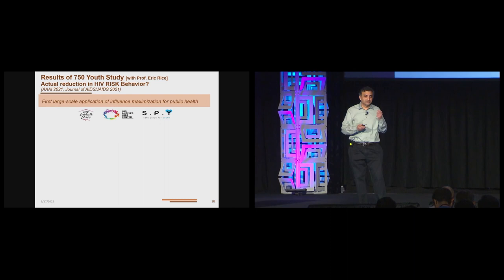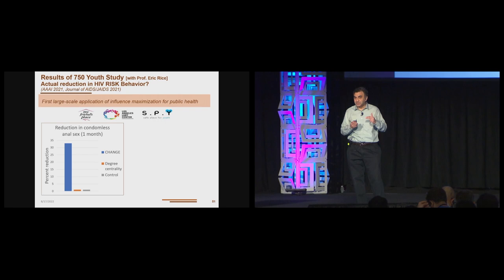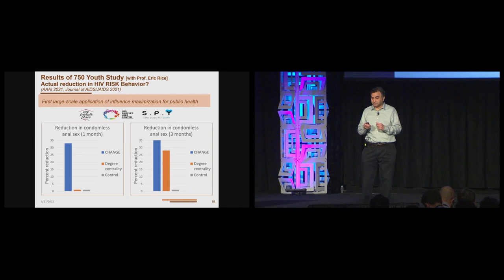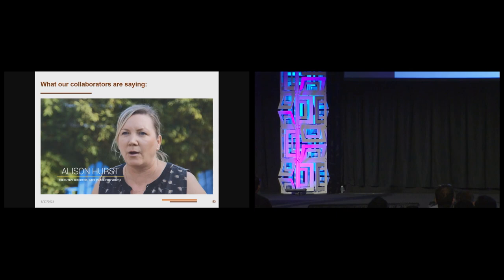And now we want to see what is the actual reduction in HIV risk behaviors. This is again a first large-scale application of influence maximization for public health. This is work done in collaboration with homeless drop-in centers in Los Angeles. And what we are trying to study is, is there an actual reduction in HIV risk behavior? So we select peer leaders and then wait a month and then wait three months and see what was the reduction. With respect to condomless anal sex, which is one of the HIV risk behaviors, with CHANGE there is more than 30% reduction in this behavior. But with degree centrality and control group, there's no reduction. At the end of three months, we have CHANGE, degree centrality catching up with CHANGE, but CHANGE is still better.